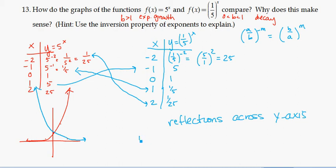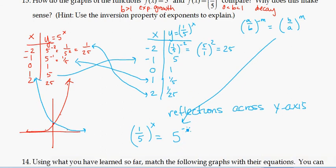Well again, think of 1/5 to the x. You can think of that as 5 over 1 to the negative x. That's again using this inversion property. So I have 5 to the negative x compared to 5 to the positive x. That is just replacing all of the x values with negative x. So that's why it's going to be reflection over the y-axis.